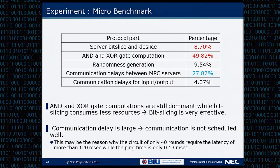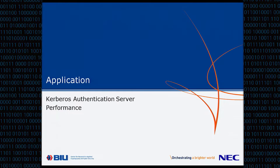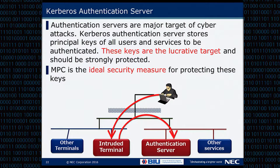Looking at the microbenchmark: although we had bit-slicing and the AND gate computation, the bit-slicing step still required a lot of time. That means without bit-slicing, the operation would be very heavy. We spent only a small amount of time on reducing this. Also, you can see there is still a large communication delay. I think this is because we have a suboptimal communication schedule currently. Our protocol requires only 40 rounds with a ping time of 0.1 milliseconds, but it takes about 200 milliseconds, so there is large room to improve latency, which I want to address in the future.